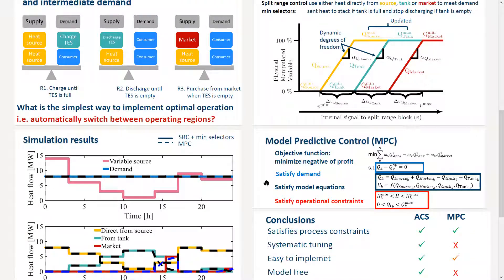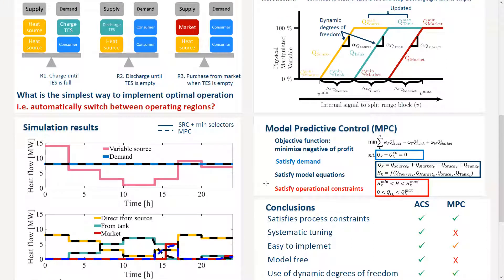The second control structure we are analyzing is a centralized one, and that is model predictive control. We want to solve an optimization problem which has as the objective function to minimize the energy sent to the stack, maximize the energy used from the tank, and minimize the energy purchased from the market, while satisfying the demand, the model equation, and the operational constraints.